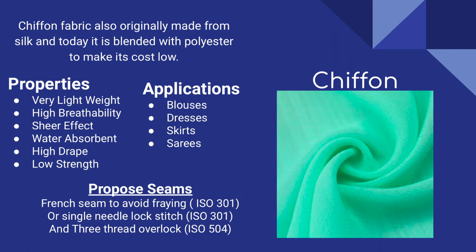Chiffon is a fabric originally made from silk, but today it's blended with polyester to make it at a lower cost. The characteristics of chiffon are that it's sheer, feels slightly rough, stretches, is strong, and shimmery. The advantages are that it's a very lightweight fabric, highly breathable, has a sheer effect, and drapes really well — which is why it's mainly used in saris, blouses, dresses, and skirts. The disadvantage is that it's low in strength and can easily fray. The proposed seam is a French seam to avoid fraying, or a single-needle lock stitch and three-thread overlock.